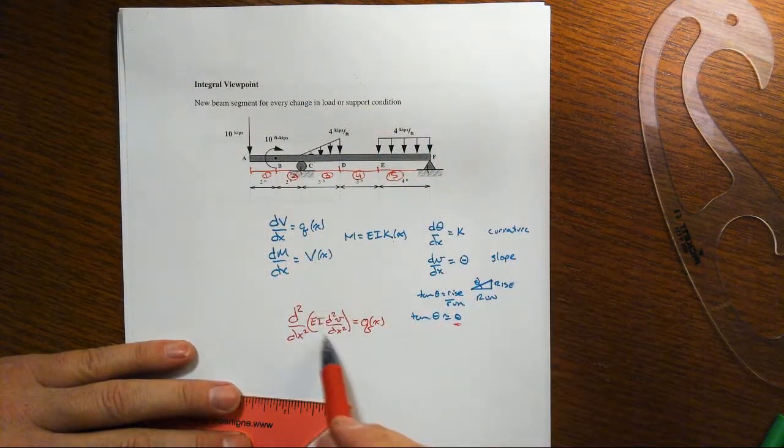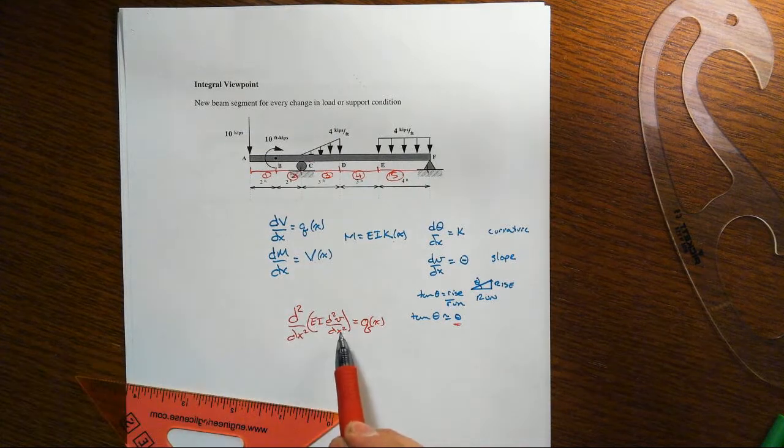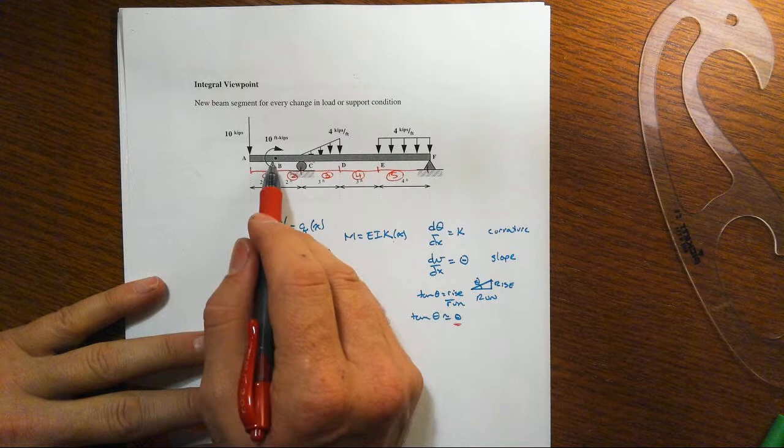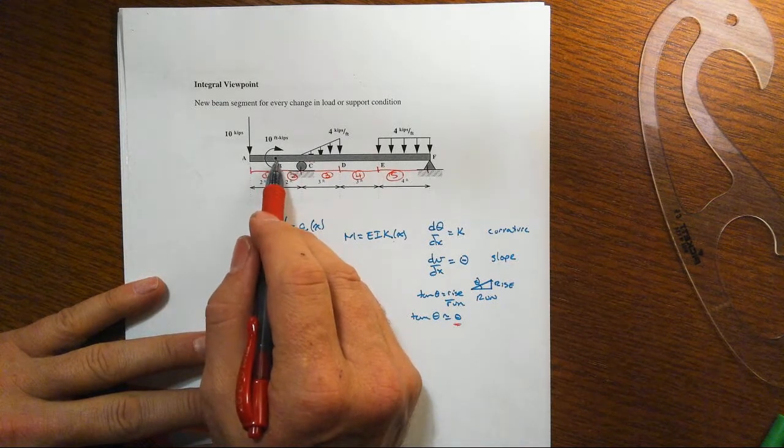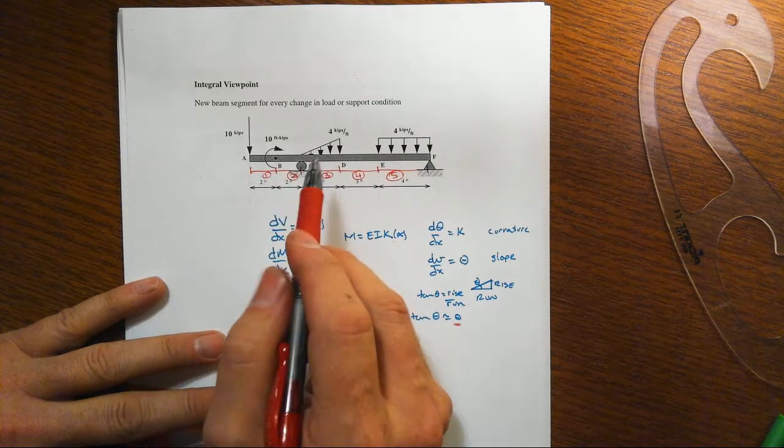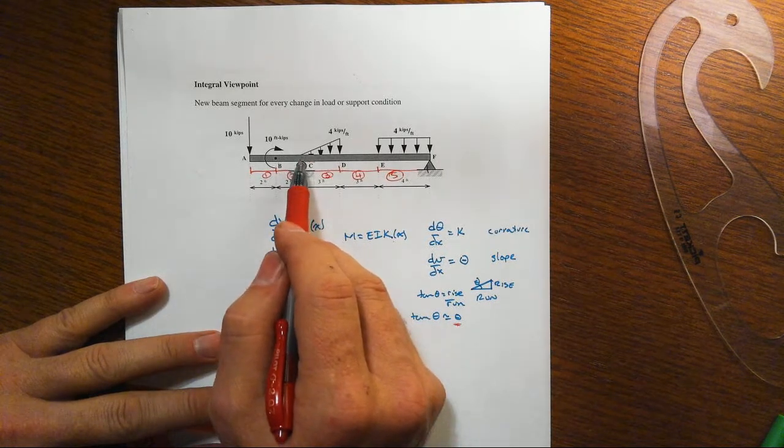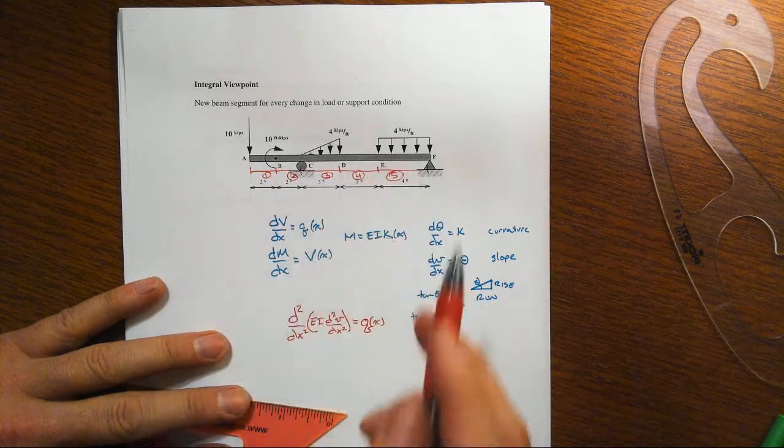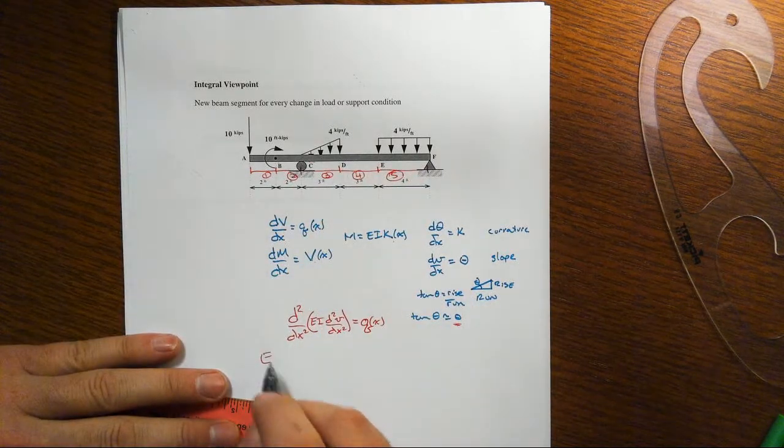Each and every one of them is going to have this governing differential equation, but then we're going to have continuity conditions that are going to happen because the slope and the transverse displacement at B must be equal to each other. And then we get something happening here, and then we get something happening here at C - same thing every little point here, so each segment...